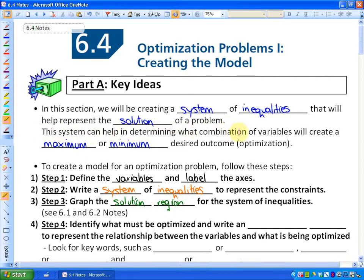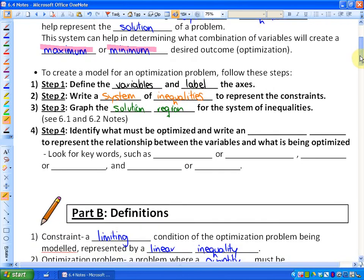This system can then help in determining what combination of variables will create a maximum or minimum desired outcome. Now this is going to be the new part, is that some points in that solution region will represent a maximum or minimum desired outcome. I'll introduce that concept right now, but not actually get to a problem.